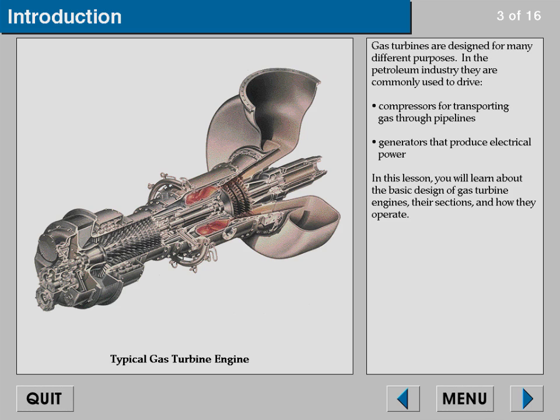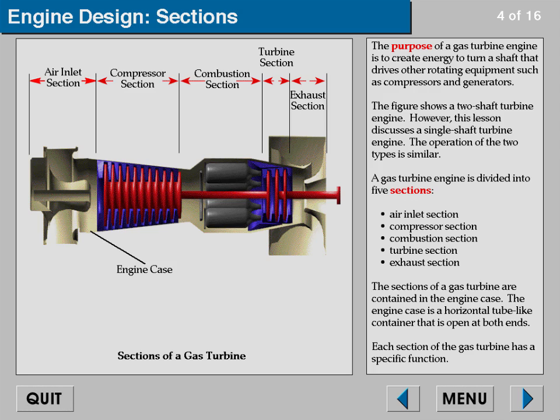Gas turbines are designed for many different purposes. In the petroleum industry they are commonly used to drive compressors for transporting gas through pipelines and generators that produce electrical power. The purpose of a gas turbine engine is to create energy to turn a shaft that drives other rotating equipment such as compressors and generators. The figure shows a two-shaft turbine engine, however this lesson discusses a single shaft turbine engine; the operation of the two types is similar.